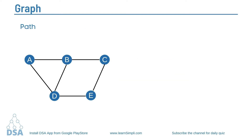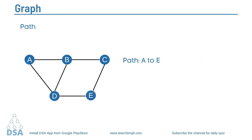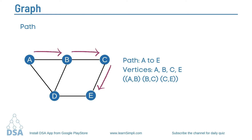Next we will see the term path. A path is a sequence of vertices in which each pair of successive nodes is connected by an edge. For example, if I take a path from A to E, the vertices would be A, B, C, and E, where each adjacent pair of vertices is connected by an edge. Here A-B is connected, B-C is connected with an edge, and C-E is also connected.